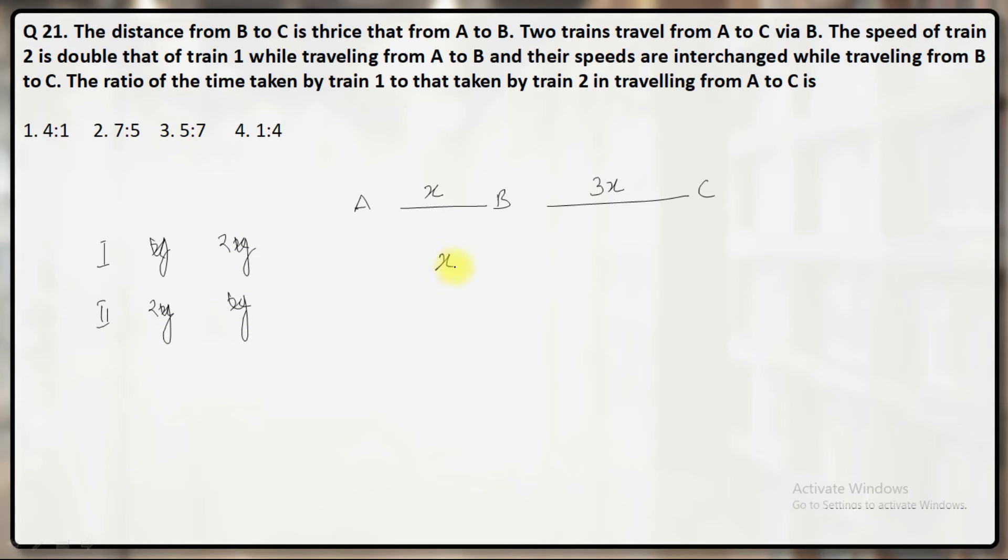Time taken by train 1 will be X was covered with the speed of Y and remaining 3X was covered with the speed of 2Y.